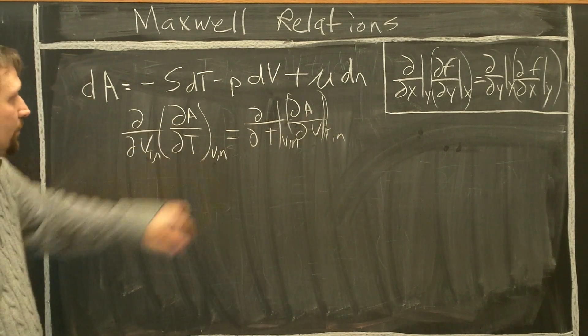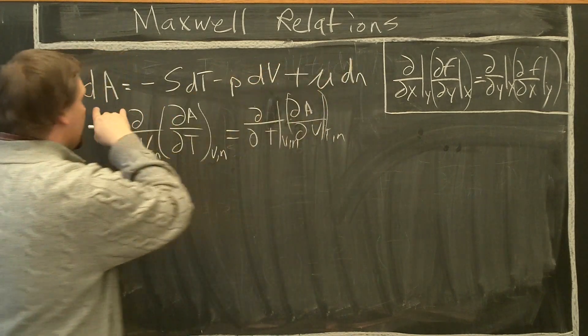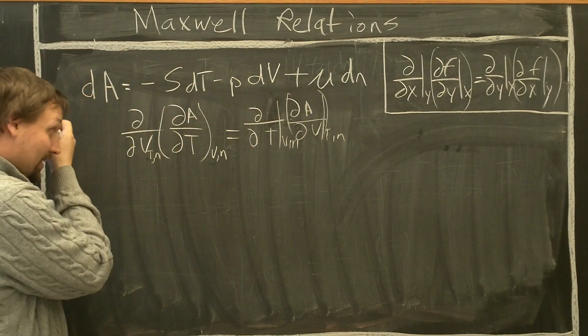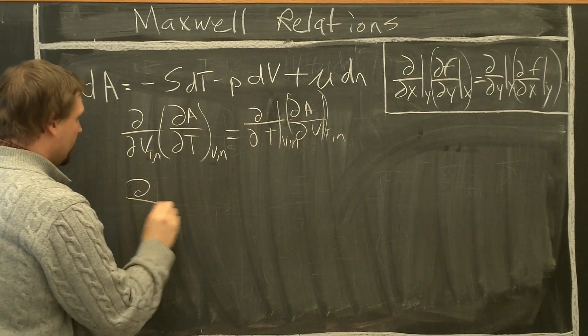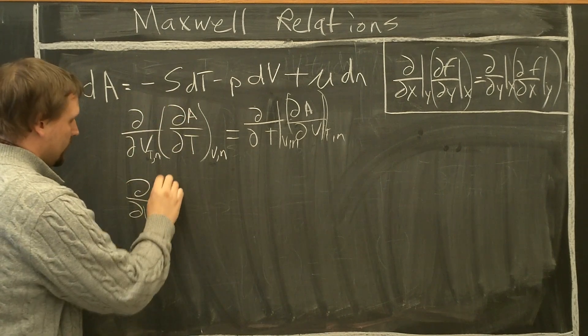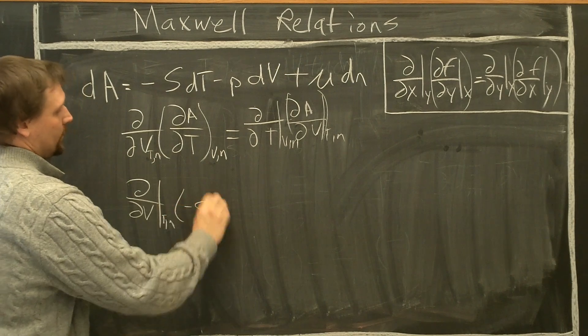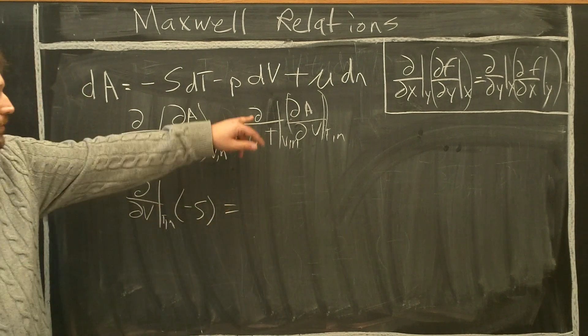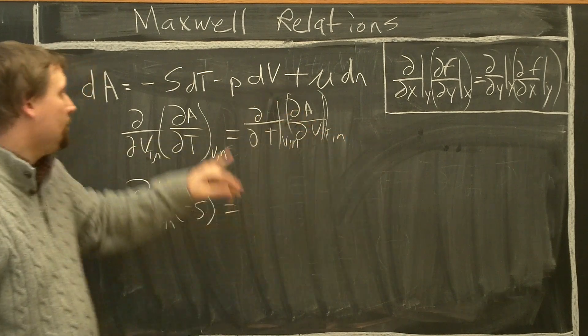So what's dA/dT at constant V? Constant V, this gone, constant N, this gone. dA/dT at constant V and N is equal to minus S. So we end up with del by del V of minus S equals partial A with respect to V, constant T and N.